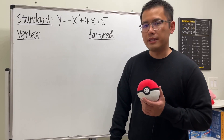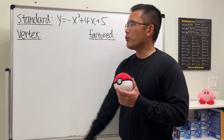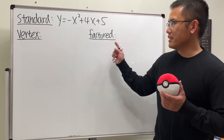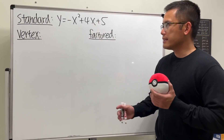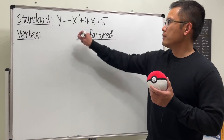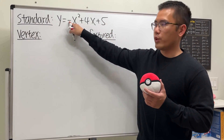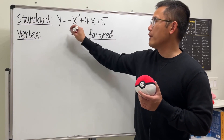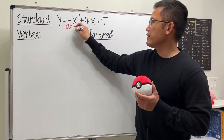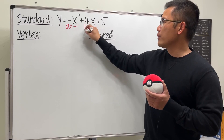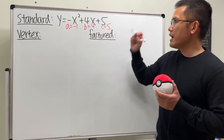When we are given the parabola in the standard form, how can we write it in its vertex form and also in its factored form? Here's our example. The standard form says the coefficient of x squared is going to be the a value, so that means we have negative 1. The b value is 4 and c is equal to 5.